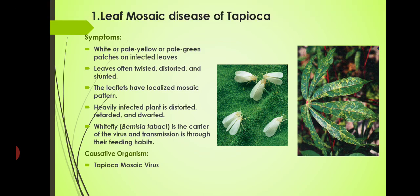The first disease we are studying is leaf mosaic disease of tapioca. This is one of the worst diseases of tapioca, that is cassava, widespread in Kerala and other tapioca cultivating parts of India and also some foreign countries like South African countries and Brazil. The pattern of our study is: first we will discuss identification symptoms, then the causative organism, and what are the control measures.